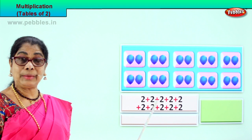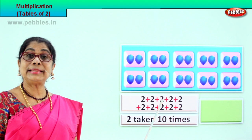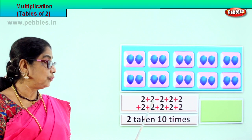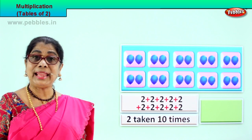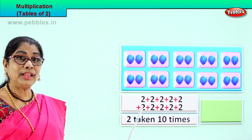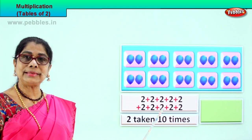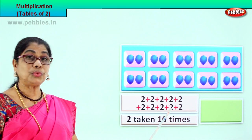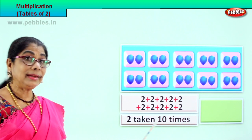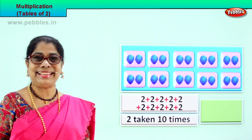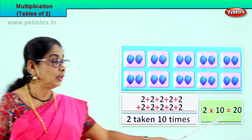Multiplication is repeated addition. So you take two and add ten times. Two plus two: four. Four plus two: six. Six plus two: eight. Eight plus two: ten. Ten plus two: twelve. Twelve plus two: fourteen. Fourteen plus two: sixteen. Sixteen plus two: eighteen. Eighteen plus two: twenty. Two taken ten times is twenty. Two into ten equals twenty. Two tens are twenty.